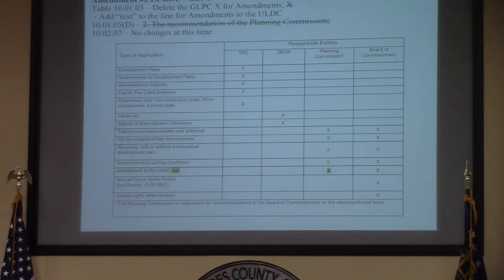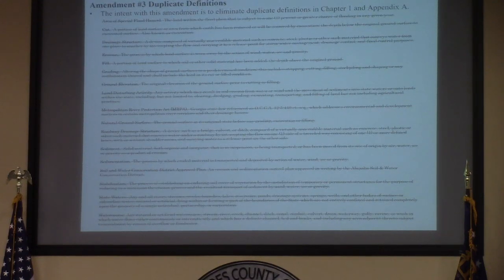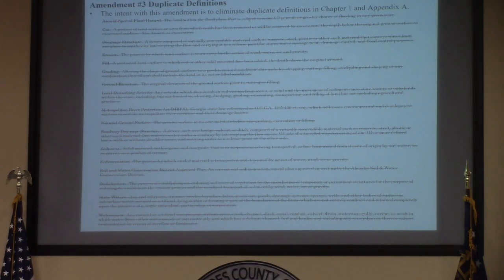Amendment 2 again changes the text amendment process, hoping to speed up the overall process by removing the planning commission from the responsible entities list and adding just the word 'text' to the table. Amendment 3 removes duplicate definitions that are also found in Appendix A of the ULDC. These definitions only appear in Appendix A, and therefore staff felt it best to remove them from the ULDC table.